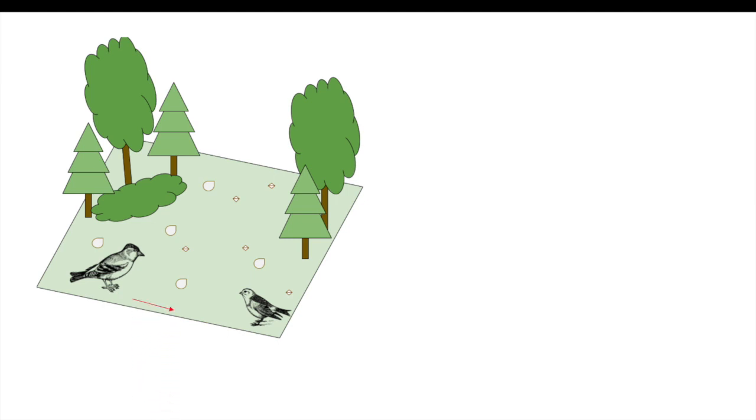The bigger bird with the bigger beak eats the larger seeds, while the smaller bird with the smaller beak eats the smaller seeds. This essentially creates an imaginary line where the bigger bird has its own food and the smaller bird has its own, and therefore their diets do not overlap. With this idea, it is believed that both birds will be able to co-exist in the same environment.